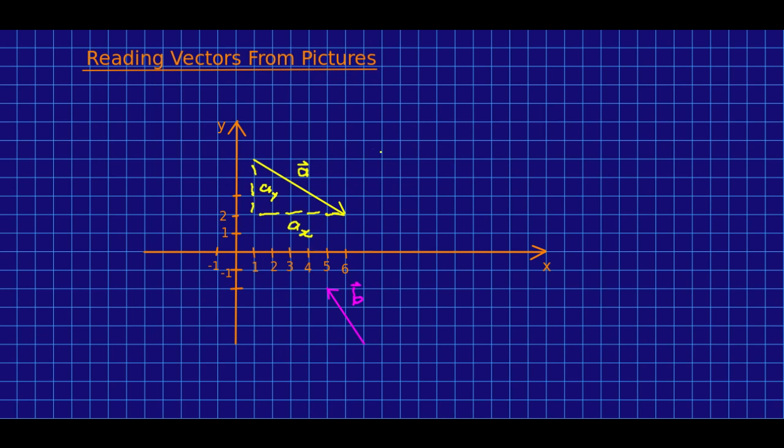Well what are ax and ay? You can probably see ax is just one, two, three, four, five and ay, well a points downwards and y is increasing in the positive direction upwards so ay must be negative. So ax is five and ay is negative three and we can now write a this way.